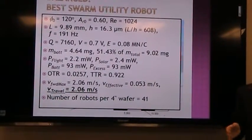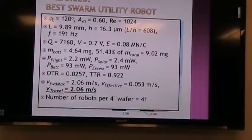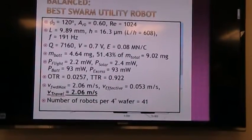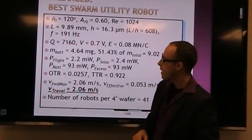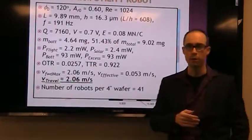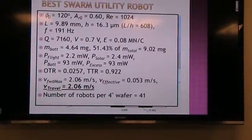This is assuming 25 watts per square meter solar power, so that's like an indoor office lighting kind of range. This one has an average velocity of 2 meters per second, and you can still get 41 robots per 4-inch wafer.